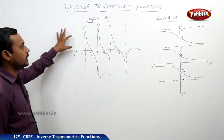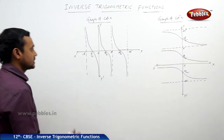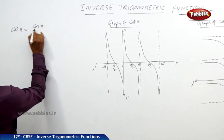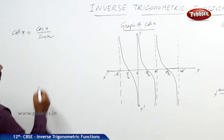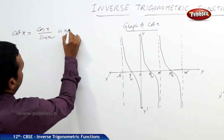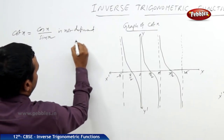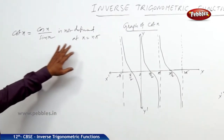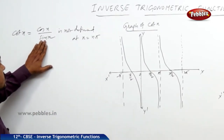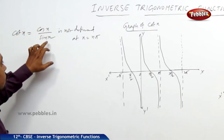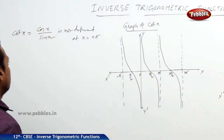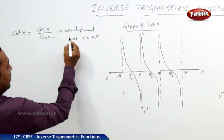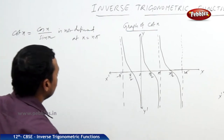We have one more trigonometric function, cot x. You know, cot x is equal to cos x divided by sin x. It is not defined at x equal to n pi, since at x equal to n pi, sin is 0. When sin is 0, the denominator becomes 0, and when the denominator is 0, the function does not exist. Therefore, cot x is defined when x is not equal to n pi.